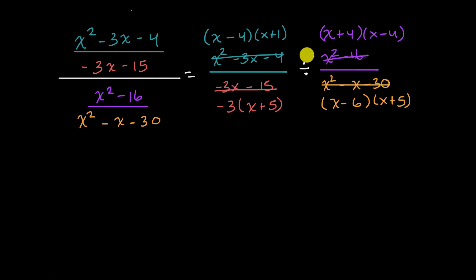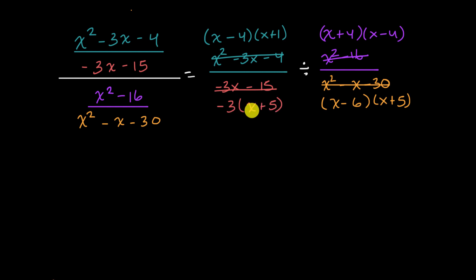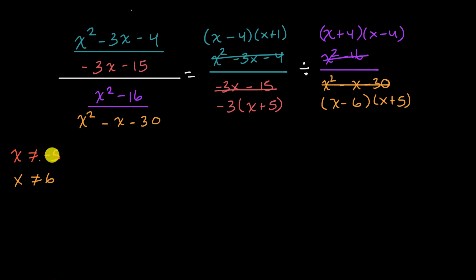Now before I go any further, we can think about what x values will get us in trouble. Any x values that make any of the denominators equal to zero would be undefined, so we want to constrain our domain that way. We can see that x cannot be equal to negative 5, because that would make this denominator equal to zero. We also know that x cannot be equal to 6. And the other denominator also tells us x cannot be equal to negative 5, so I don't have to rewrite that again.